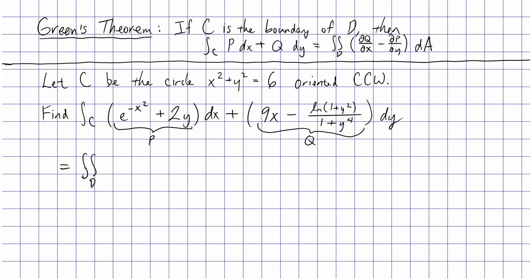We'll catch the details for that a little bit later, but we need the partial derivative of q with respect to x. Well, fortunately, this weird thing with all the y's in it goes away. We differentiate with respect to x and just get a 9, and we subtract the partial of p with respect to y, so you just get a 2, and then you have dA.